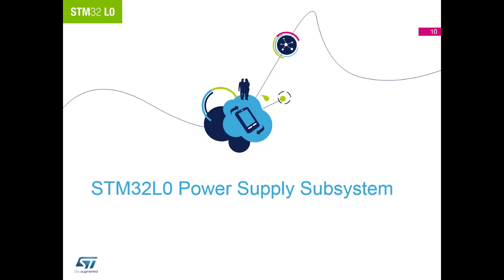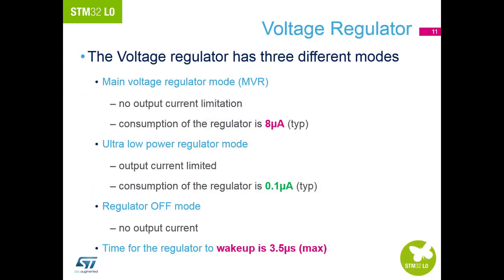We also need to understand the power supply system to the core before we can look at the low power modes. The internal voltage regulator has three different modes highlighted on the screen. Depending on the sequence of the settings of the control bit for the regulator and the executing of the low power entry commands will depend on which low power mode you enter.